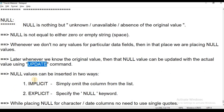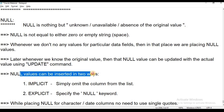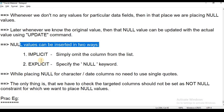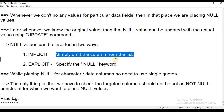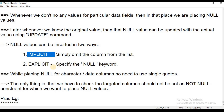Null values can be inserted in two ways. One is implicit insertion. Implicit means whenever we are omitting the columns — when we use the second method, inserting values into specific columns, and we omit certain columns, a null value is automatically placed in those columns. That is the implicit insertion of null values.